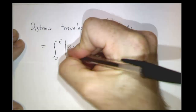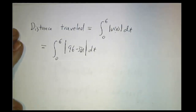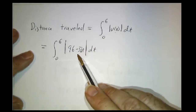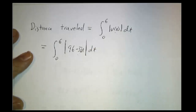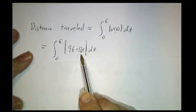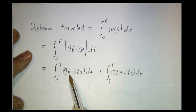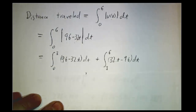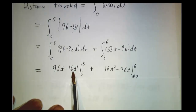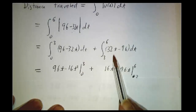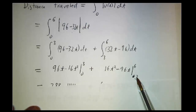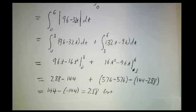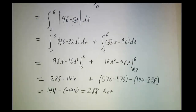In this case, total distance is the integral of |96 minus 32t| from 0 to 6. The absolute value equals the function itself when positive and its negative when negative. This expression is positive for the first three seconds and negative after. So we split: from 0 to 3, integrate (96 minus 32t); from 3 to 6, integrate (32t minus 96). Evaluating gives 96t minus 16t² from 0 to 3, plus 16t² minus 96t from 3 to 6. The total distance traveled is 288 feet — the ball went up 144 feet and came down 144 feet — while the net displacement is 0.